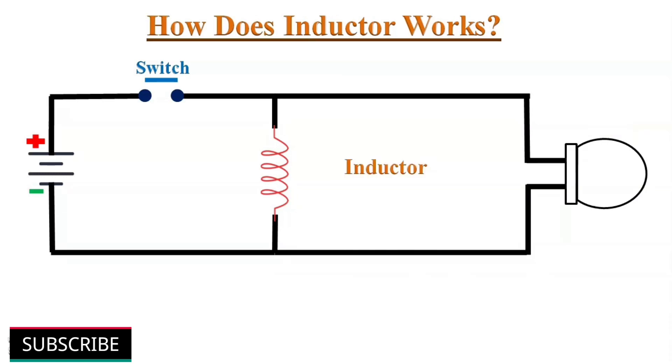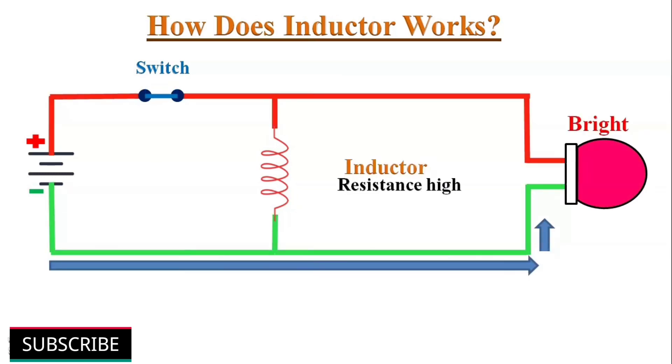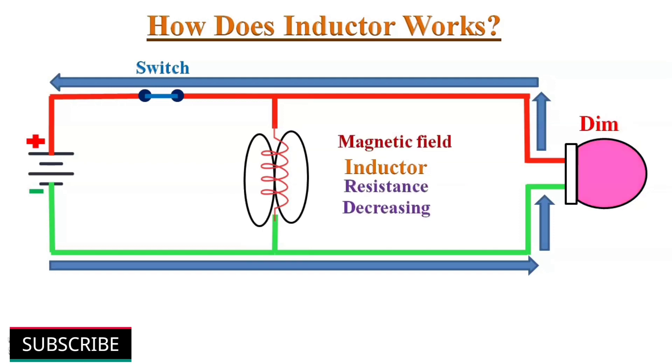When we power on this circuit, the electrons will start to flow through the lamp, powering it on brightly. A very small current will flow through the inductor because it has higher resistance than the filament of the lamp. A magnetic field will begin to form in the inductor.